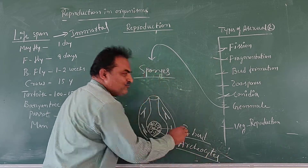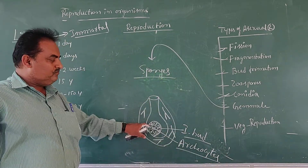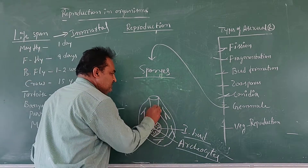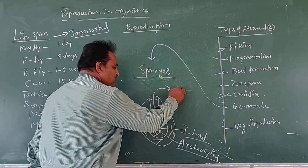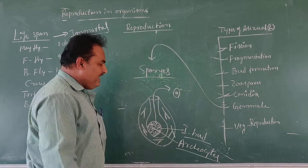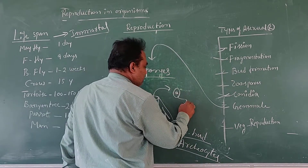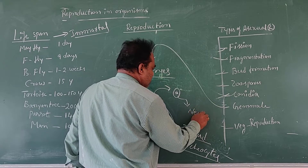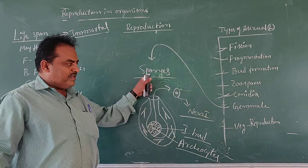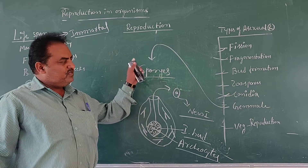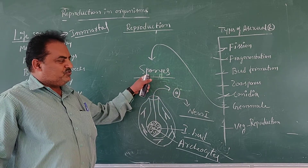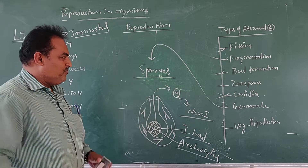Internal buds containing characteristic cells are called archaeocytes. The archaeocytes are released out from the body. Each archaeocyte develops into a new organism, a new individual. This process is common in the case of sponges. The best example for gemmule formation is sponges.